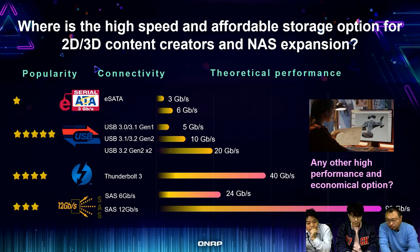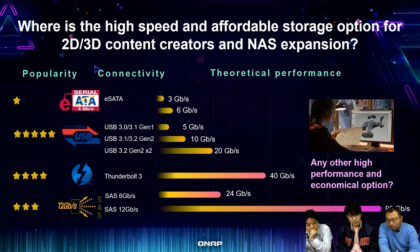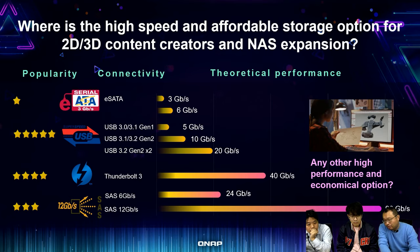Previously there was Thunderbolt 2 at up to 20 gigabit per second, but now Thunderbolt 3 is getting popular in Macs and some Windows computers at up to 40 gigabit per second. Many Mac users buy a Thunderbolt 3 RAID unit with hardware RAID or a Thunderbolt 3 JBOD to expand their capacity. However, Thunderbolt 3 costs a bit more money to buy an external storage device.